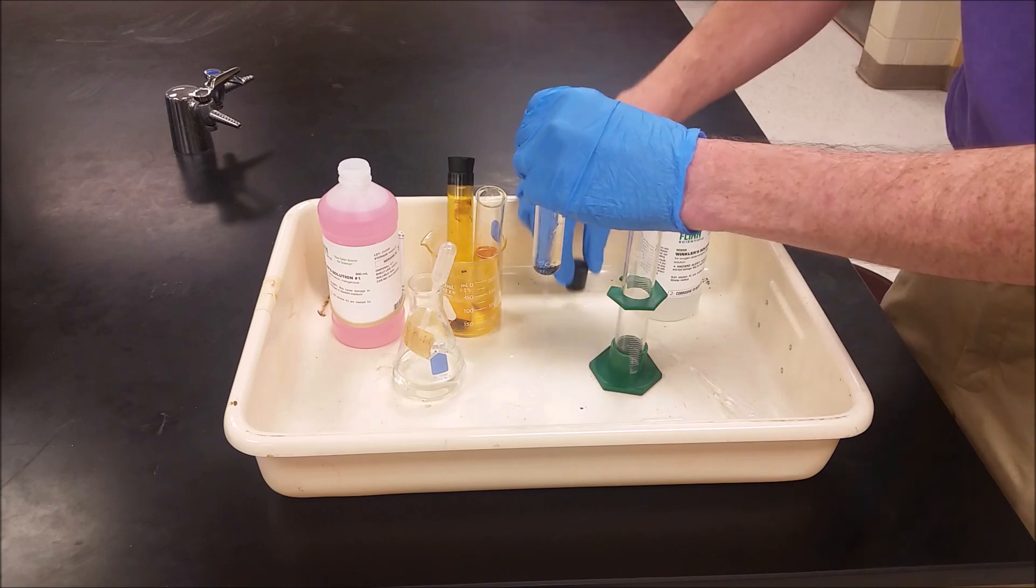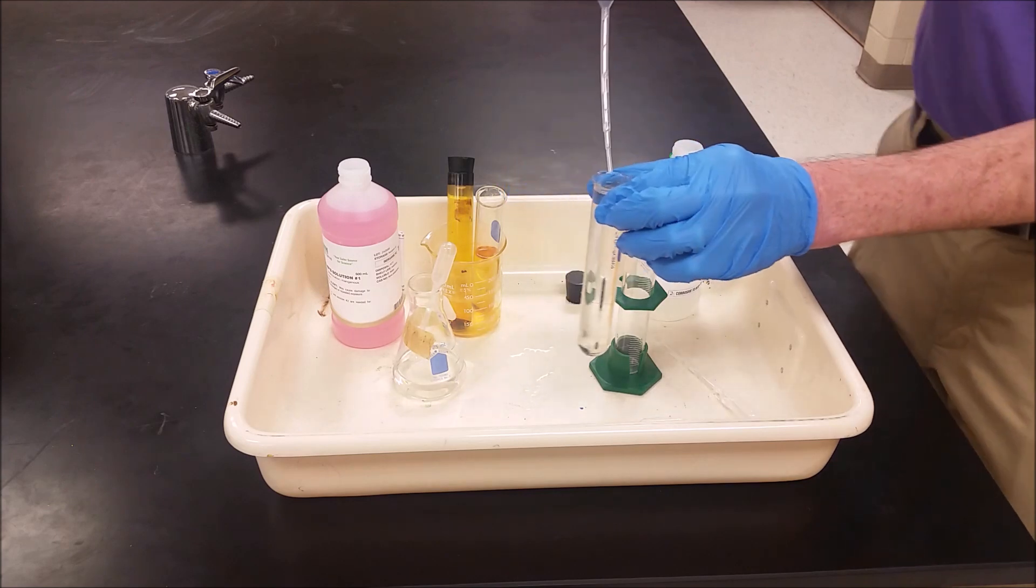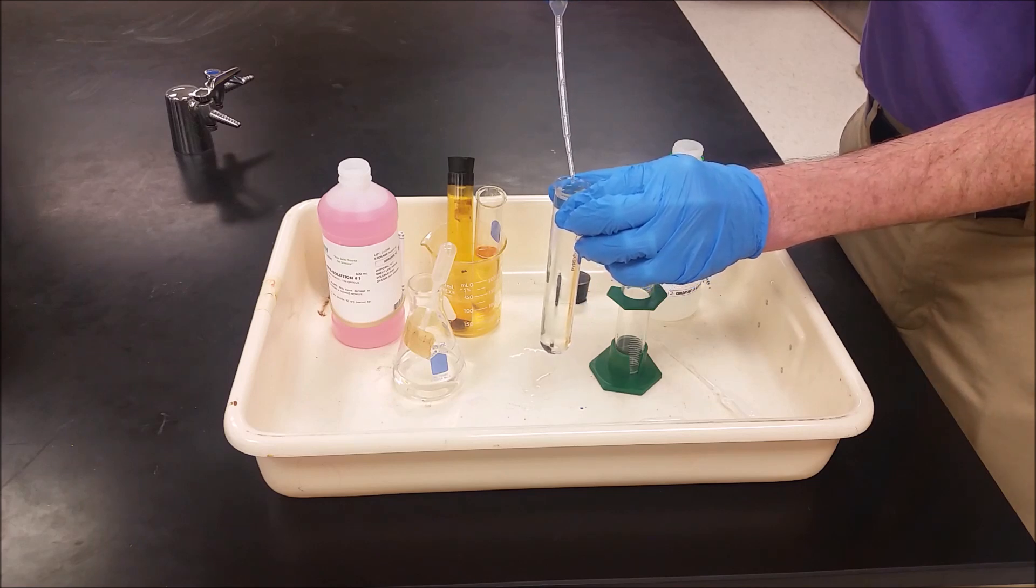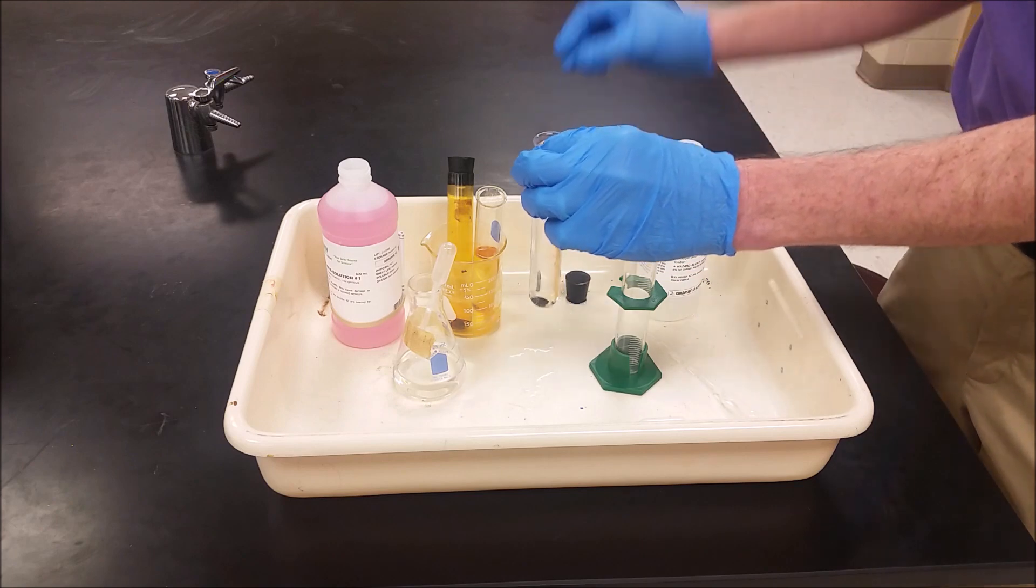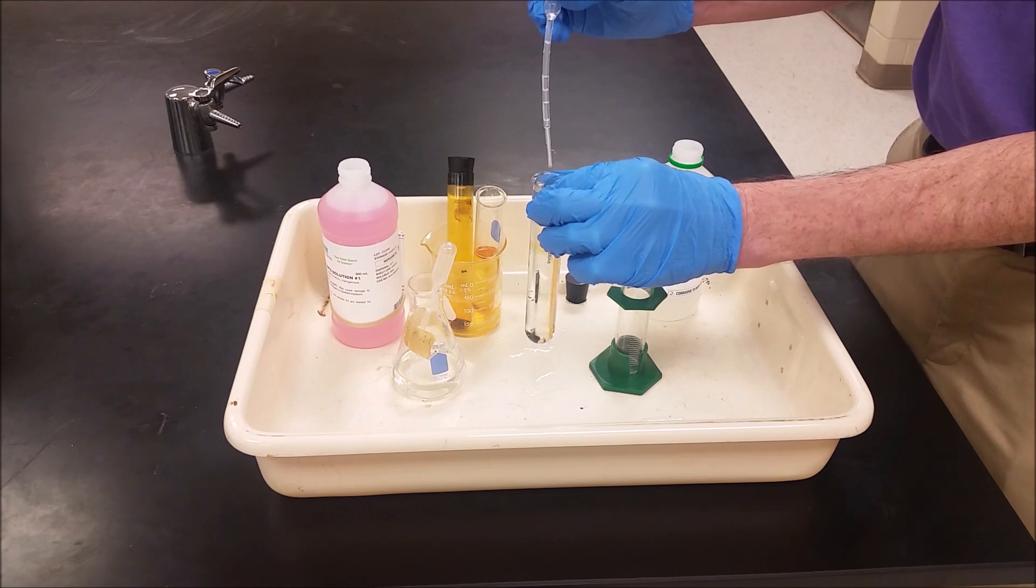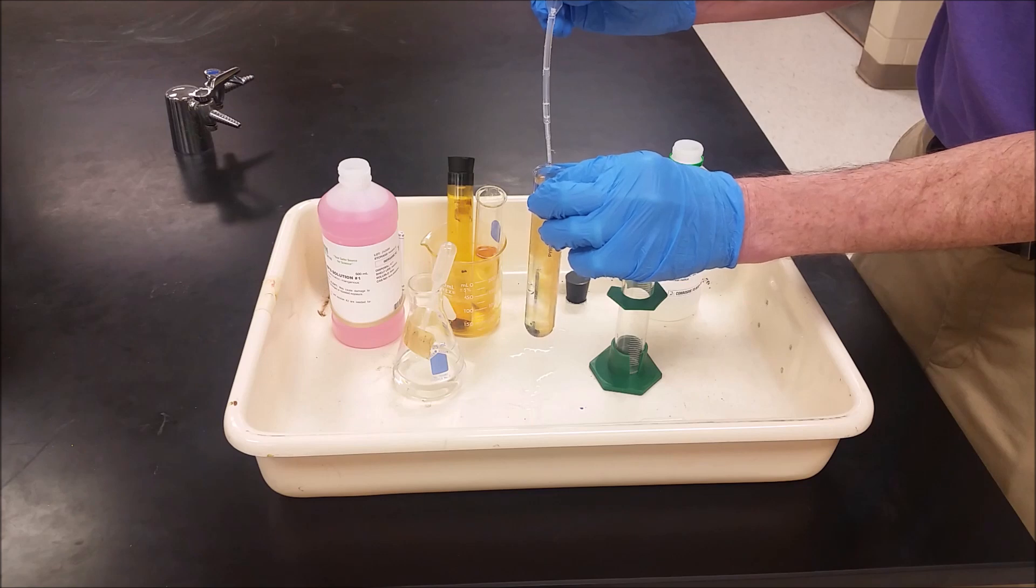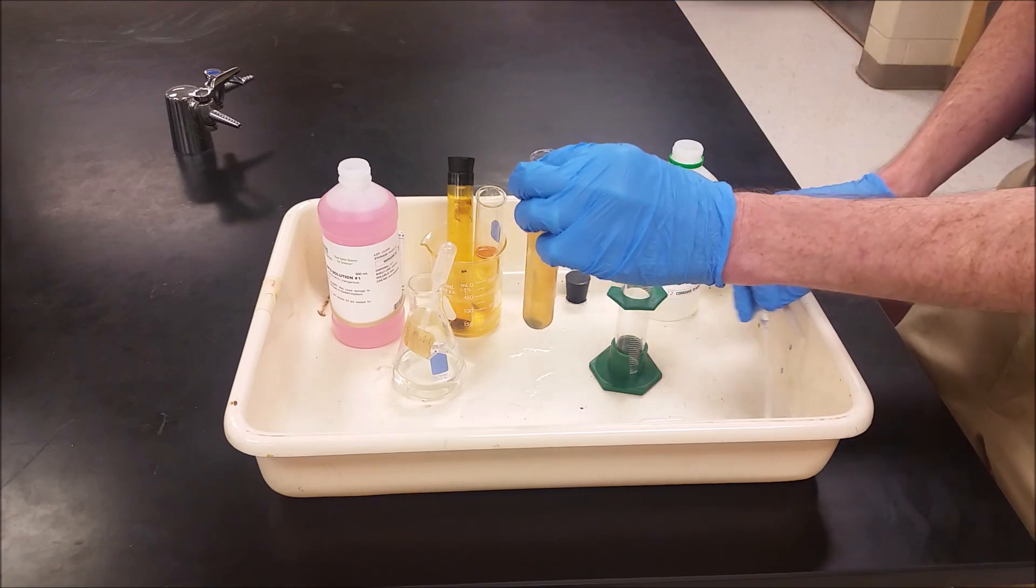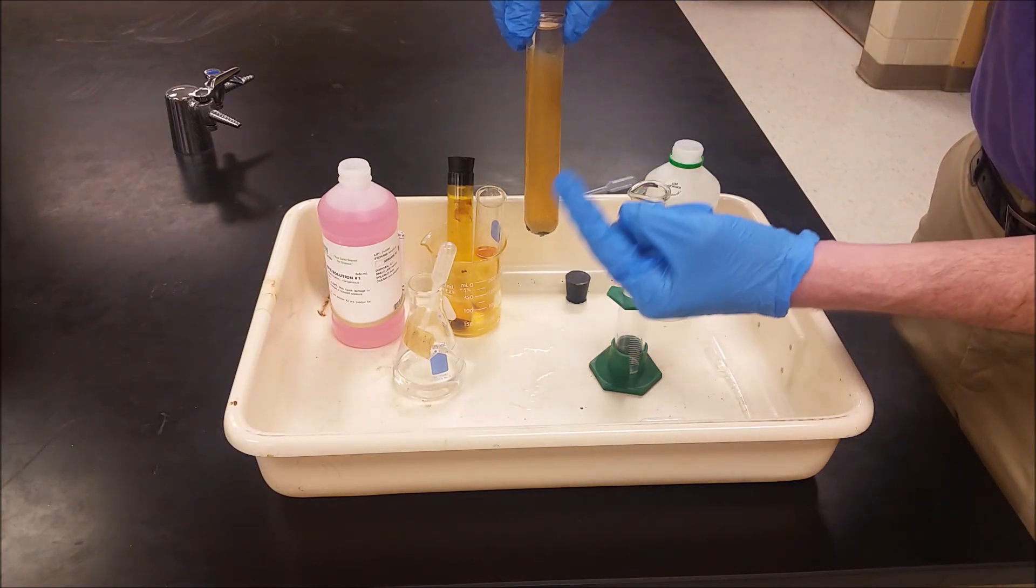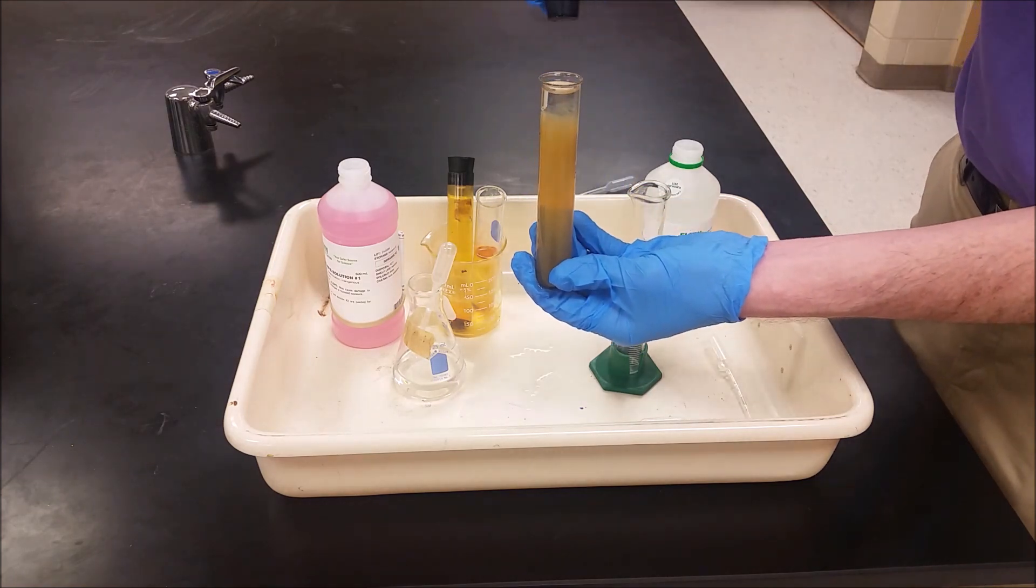We're going to add eight drops of this solution which has manganese and iodine in it. And then to that we're going to add another eight drops of solution that adds a little bit of base. As we're doing that, the oxygen that was in there is reacting with the manganese and that base in order to form a brown precipitate.